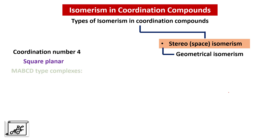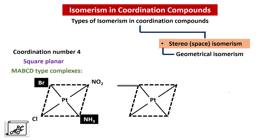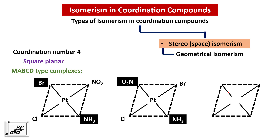Let us consider the MABCD type of complexes. Here we cannot have cis-trans isomers, but there could be different arrangements of ligands around the central metal atom. For example, in one arrangement ammonia and bromine are on the opposite side; in another, ammonia and nitro group are on the opposite side; and in a third, ammonia and chlorine are on the opposite side. This is a type of geometrical isomerism but it does not consist of cis or trans, because as all four ligands are different we cannot decide whether they are cis or trans.